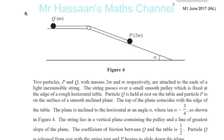We have question number 8 from June 2017 Mechanics M1 paper from IAL. You have two particles P and Q with masses 2M and M respectively, attached to the ends of a light inextensible string. The string passes over a small, smooth pulley fixed at the edge of a rough horizontal table. Particle Q is held at rest on the table, and particle P is on the surface of a smooth inclined plane. The plane is inclined to the horizontal at angle alpha, where the tangent of alpha is three quarters.